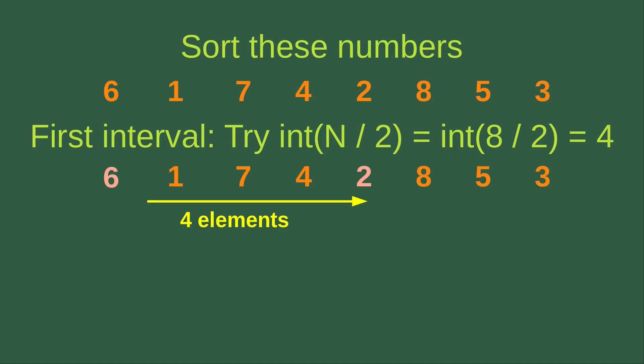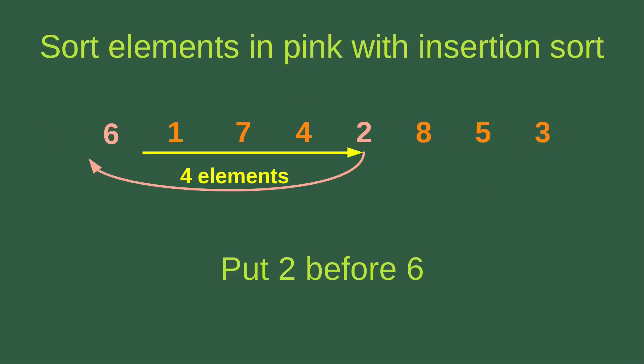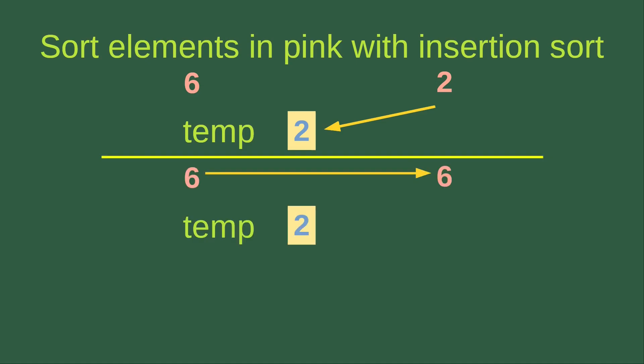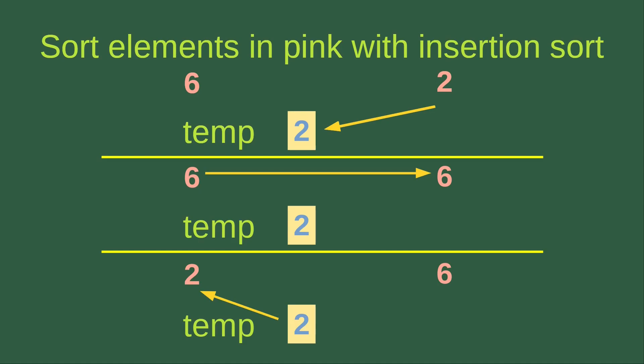So we just need to sort the two numbers 2 and 6. The sorting can be done using insertion sort. First, we need to put the value on the right-hand side to the temp variable. After that, we copy the left element to the right-hand side — copying 6 from the left to the right. Finally, we put the temporary element to the left position. So in this case, 2 and 6 are swapped.